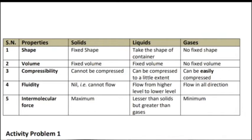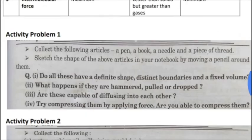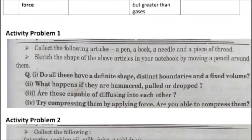The fourth property is fluidity, which means the ability to flow. Solids have nil fluidity — they cannot flow. Liquids flow from a higher level to a lower level. Gases flow easily in all directions. The fifth property is intermolecular force, which is maximum in solids — that is why they are rigid and have a fixed shape. Liquids have intermediate intermolecular force, less than solids and more than gases. Gases have minimum intermolecular force, so they flow easily in all directions. Based on these properties, you have an activity problem.